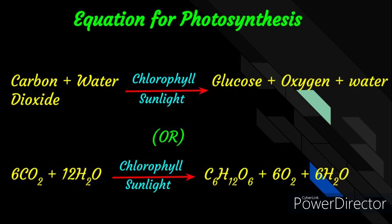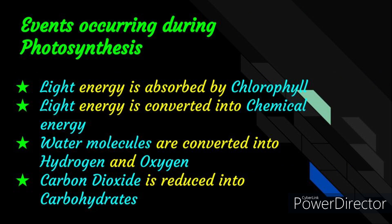Now let us learn the equation for photosynthesis: carbon dioxide plus water, in the presence of chlorophyll and sunlight, gives rise to glucose plus oxygen and water. The chemical formula for photosynthesis is: 6CO2 + 12H2O, in the presence of chlorophyll and sunlight, gives rise to C6H12O6 + 6O2 + 6H2O.